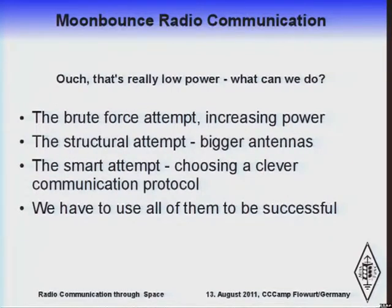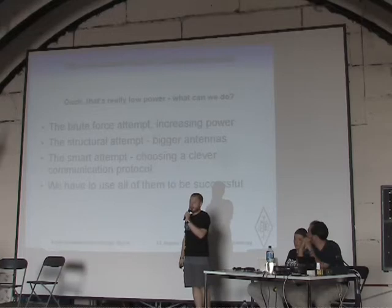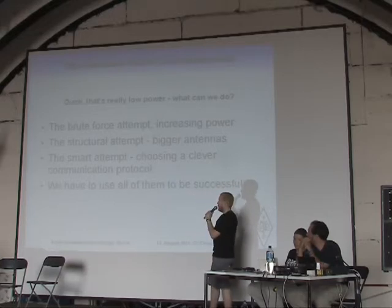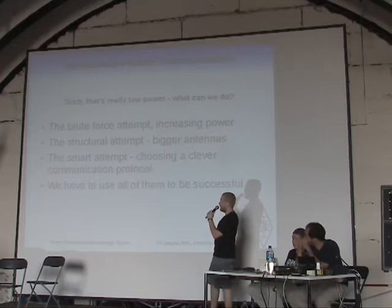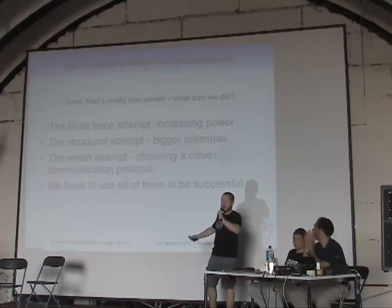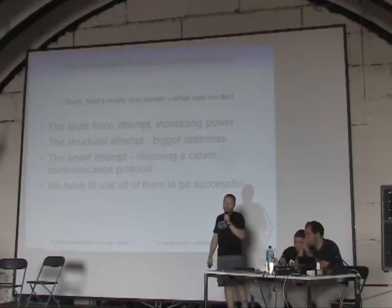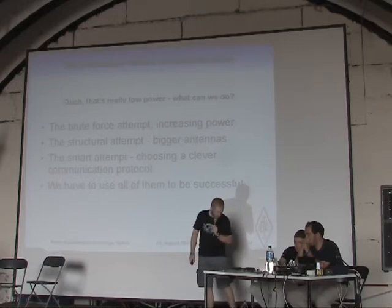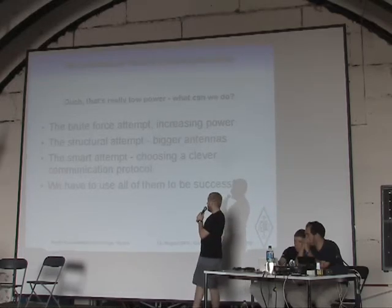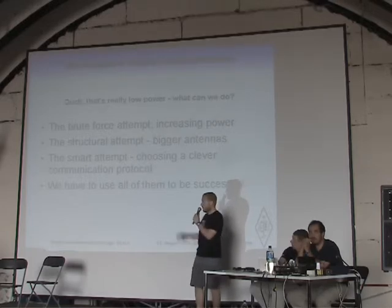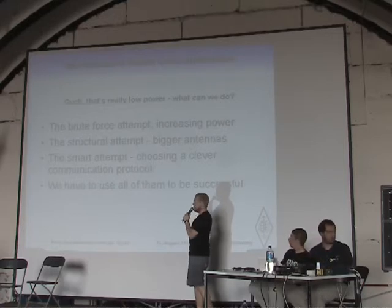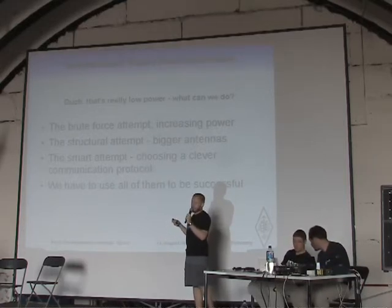That's really low power, but what can we do? Of course we can brute force it — use more power. If we use 1,000 watts instead of 100, we get 10 dB more, reaching minus 158 dBm. We can use the structural approach: make big antennas with more gain. That's nice if you have space and money — radio dishes work great if they're like 50 meters wide. And there's the smart approach: use a clever communications protocol. The signals are so low that we have to do all of that to be successful.